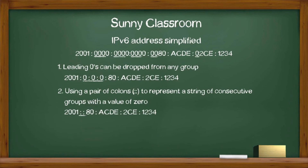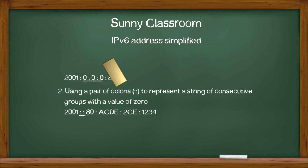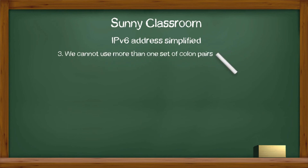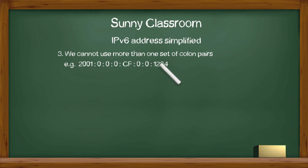Step 3 is optional, which is only necessary when we have more than one set of colon pairs after Step 2. In this step, we will make sure we cannot use more than one set of colon pairs. For example, we have an IP address with 3 consecutive groups of value 0, and 2 consecutive groups of value 0.